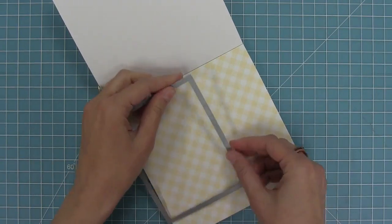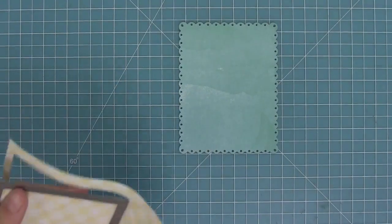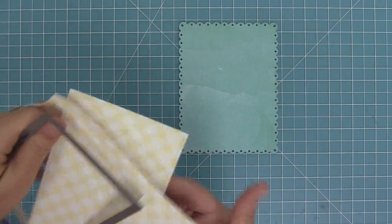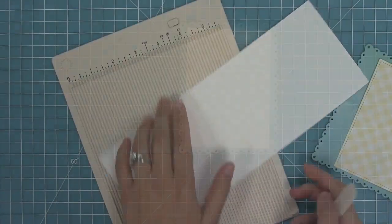I'm going to die cut that with a stitched rectangle as well and these two pieces are going to layer there and look super cute.